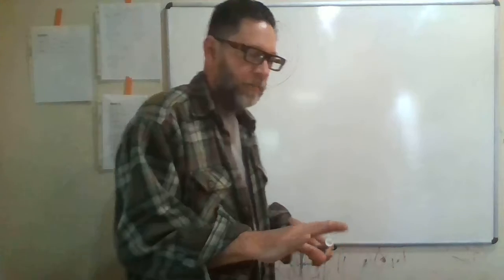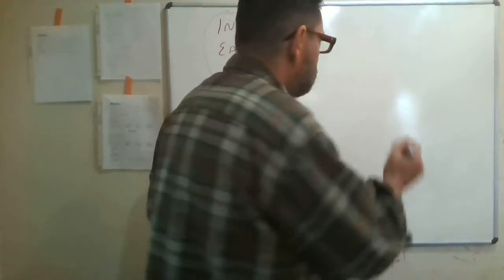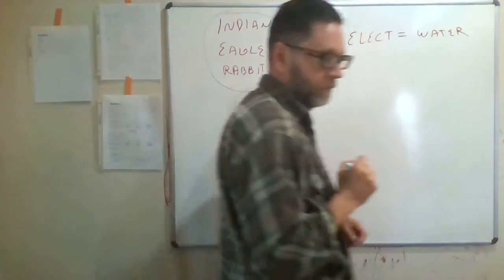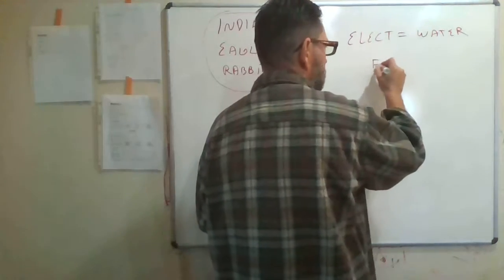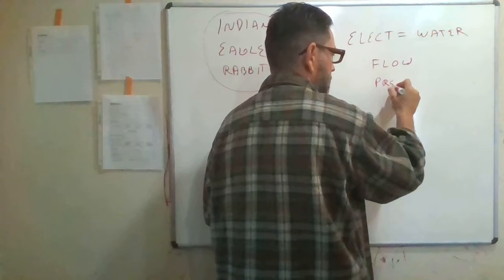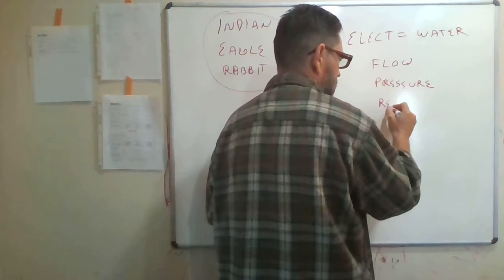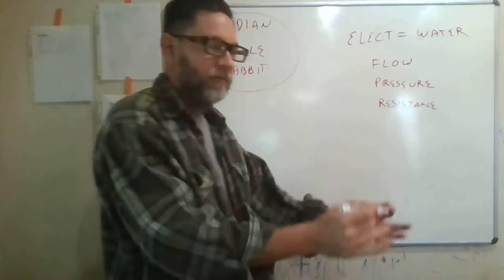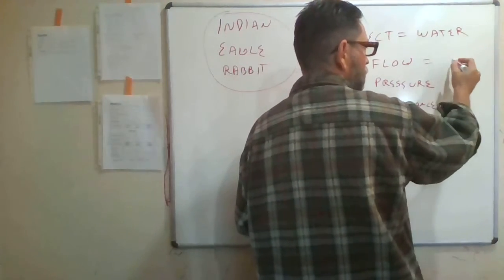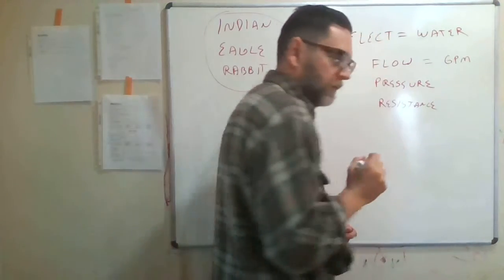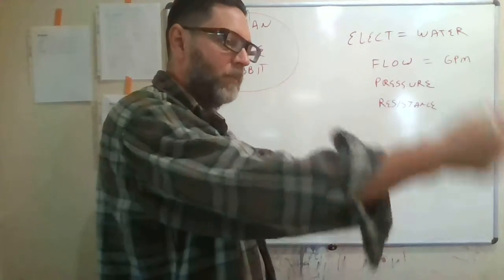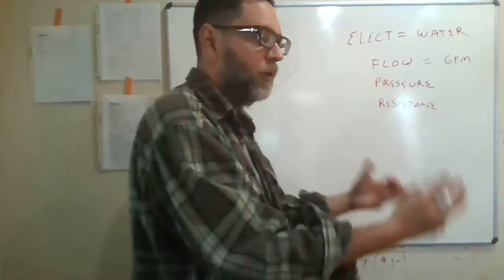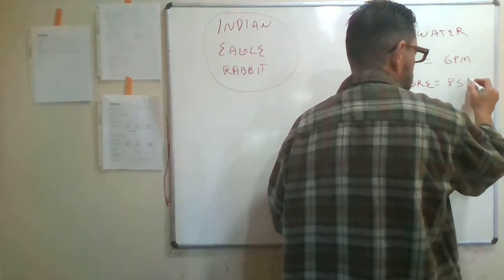Let's go back a little bit to what we talked about last time. Electricity is just like water — it works like water. It has flow, it has pressure, and it has resistance. If you want to understand how to get water moving, the flow is measured in gallons per minute — how many gallons per minute are being delivered. That's flow.